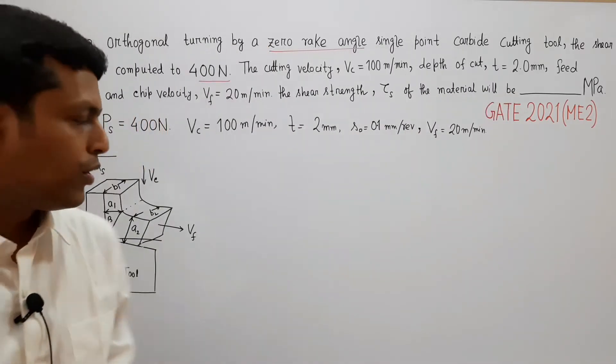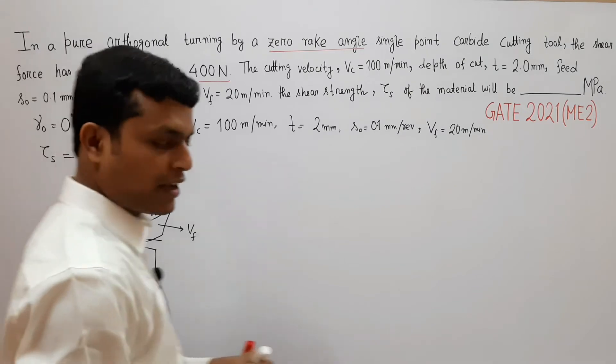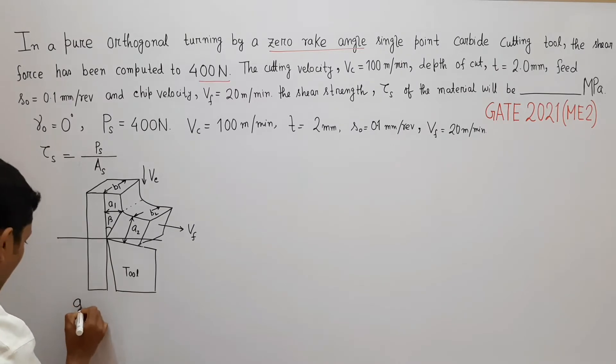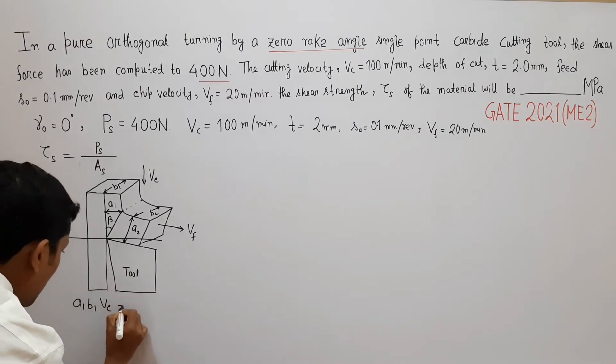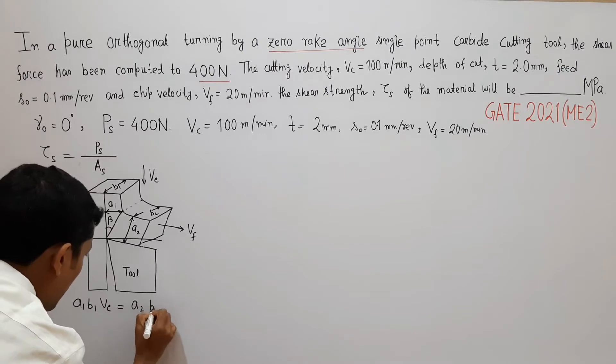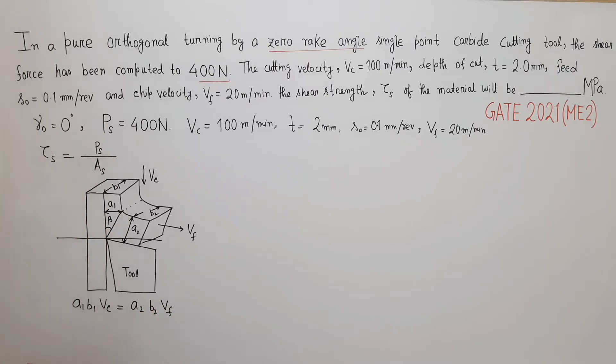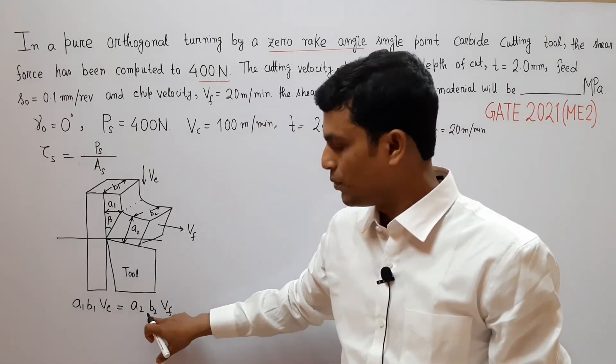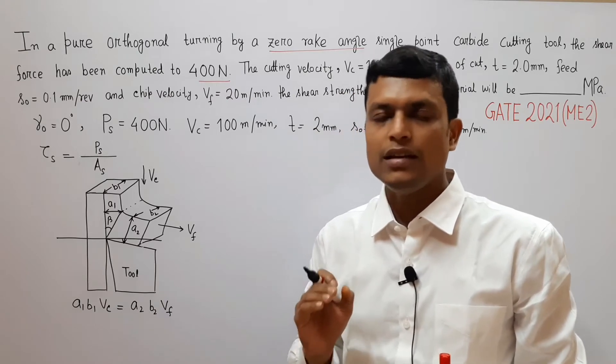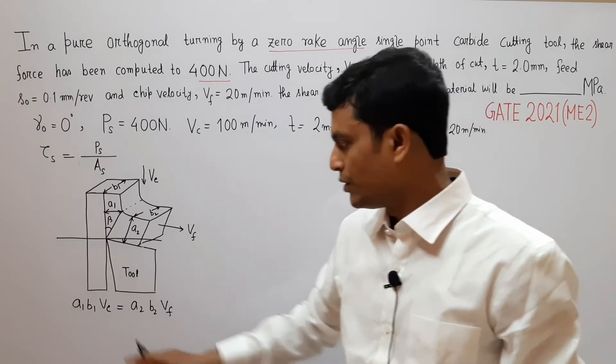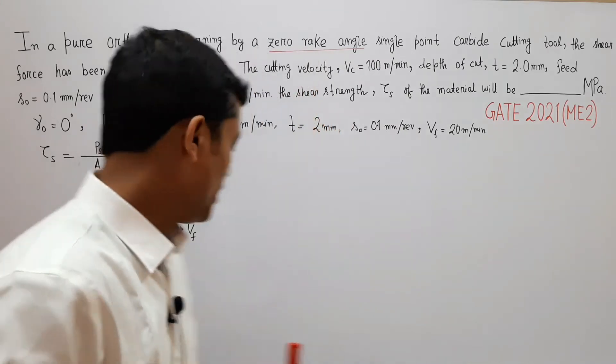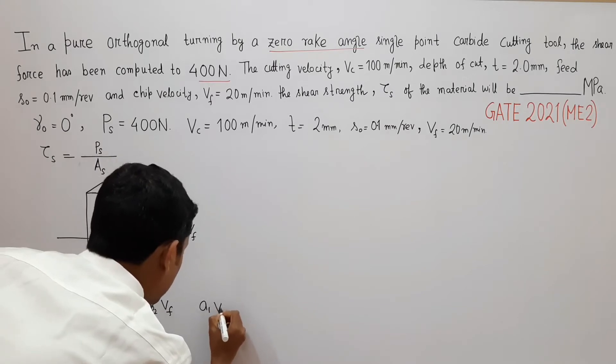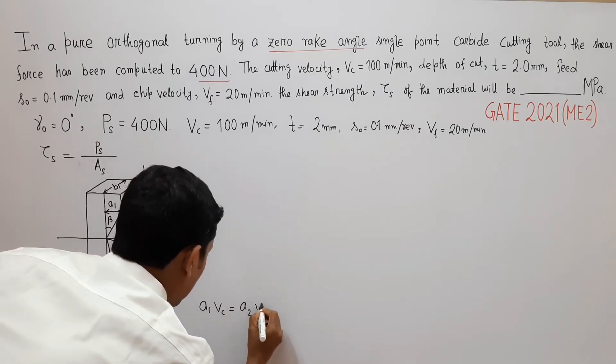If we apply continuity equation here, we can write A1·B1·Vc equals A2·B2·Vf. Now we know that in machining process B1 is equal to B2 - that is, machining is a plane strain condition. So if B1 equals B2, then B1, B2 cancel out. So A1·Vc equals A2·Vf.